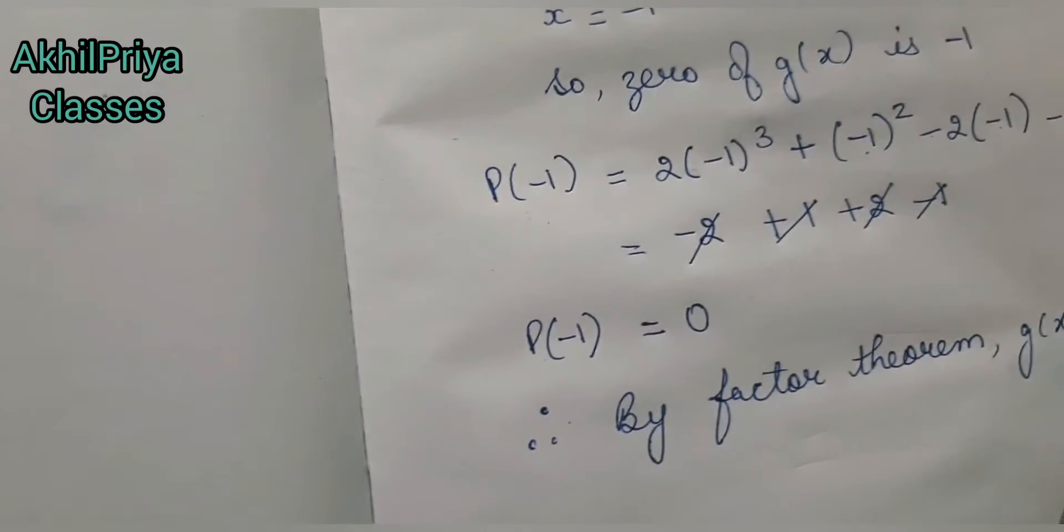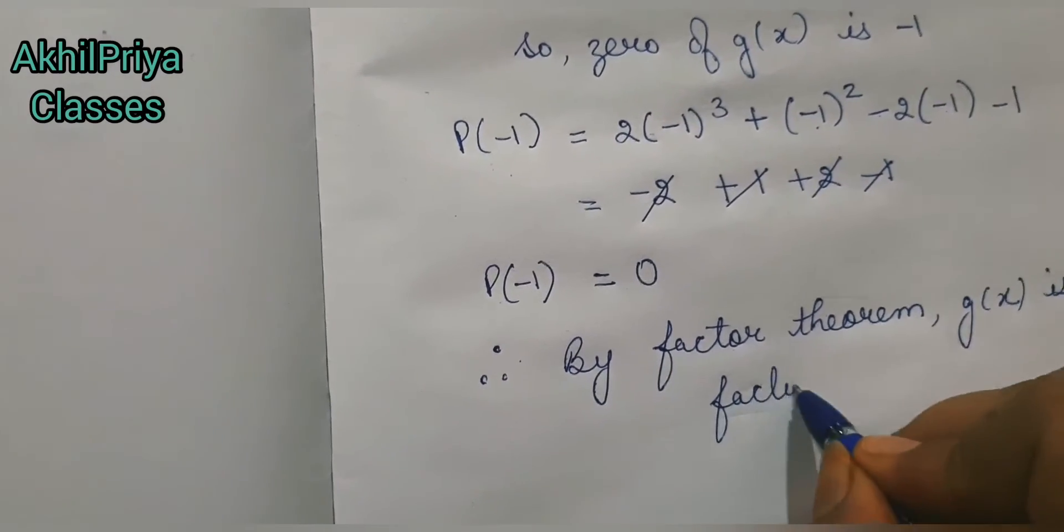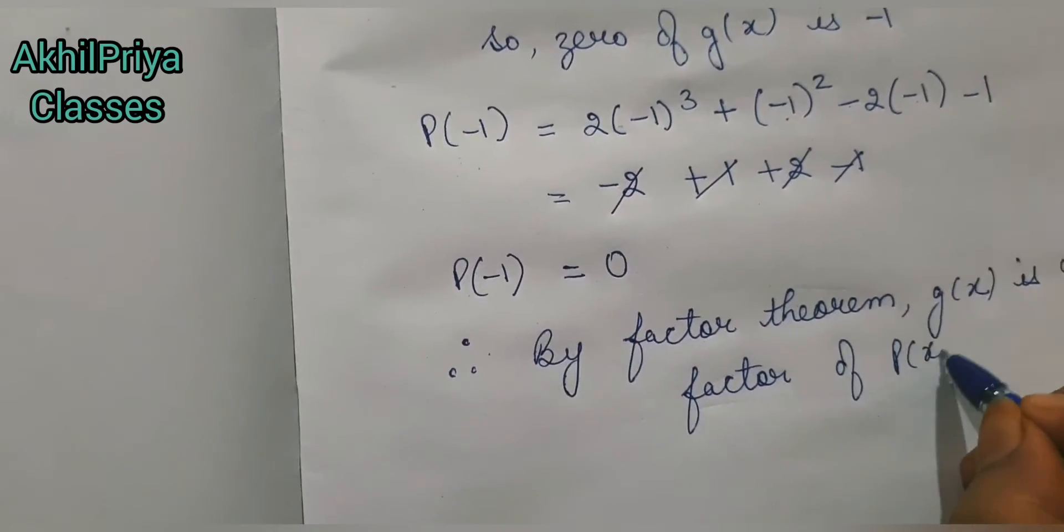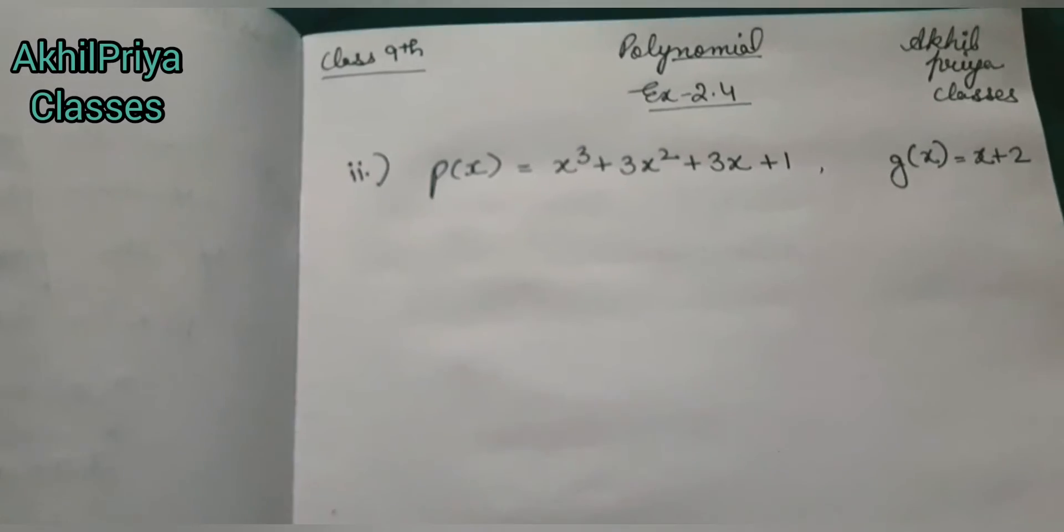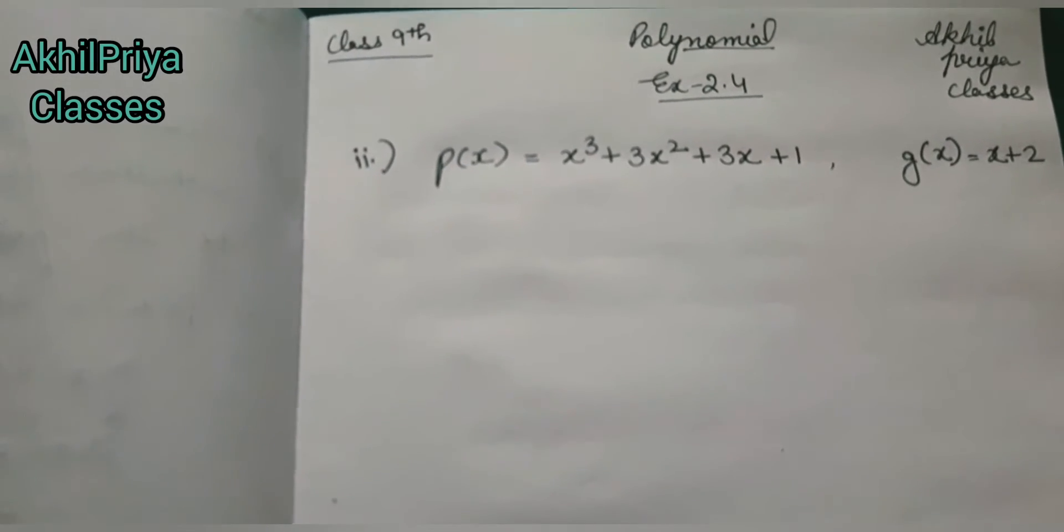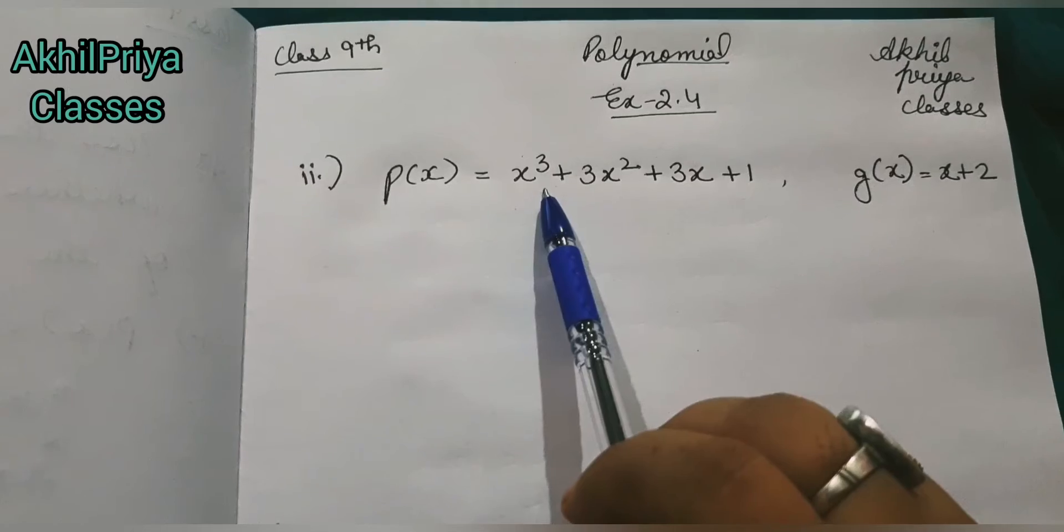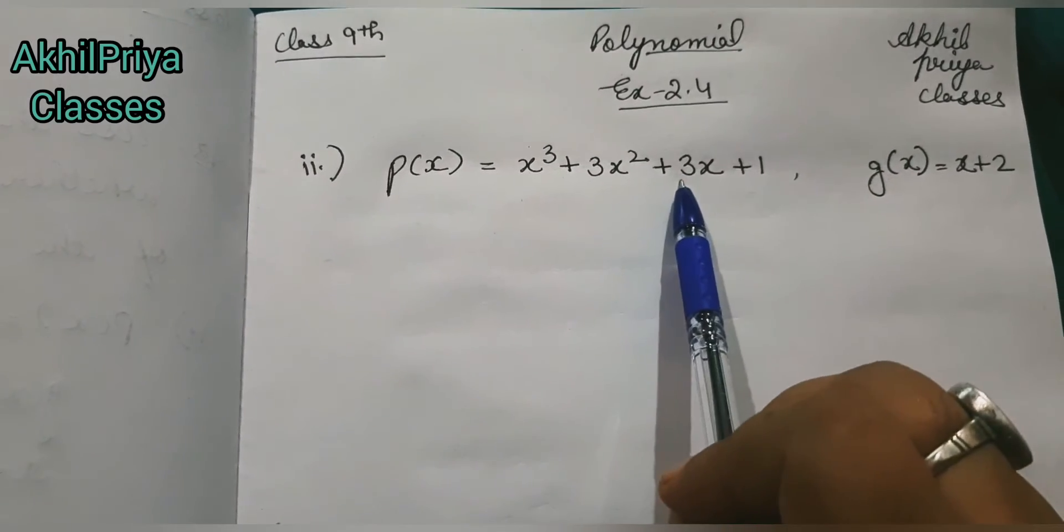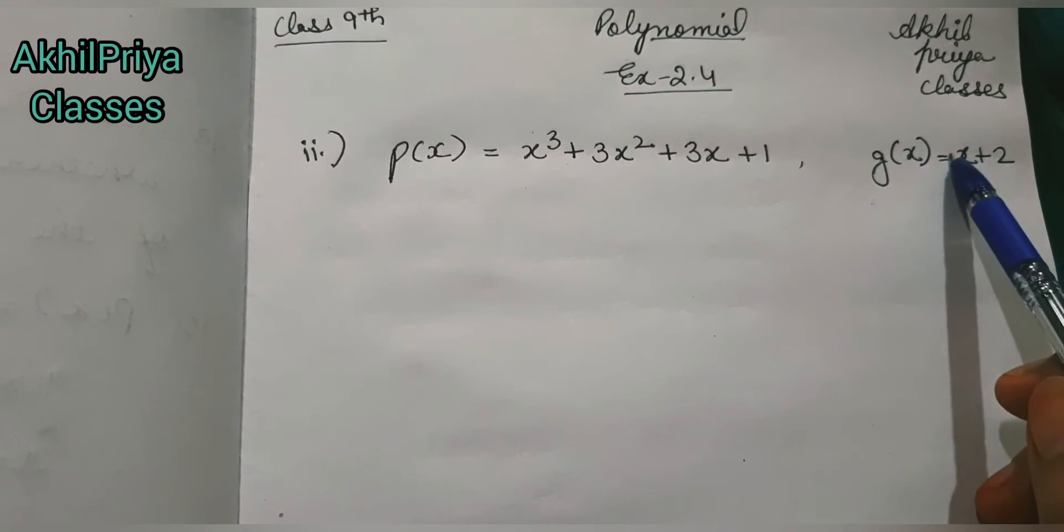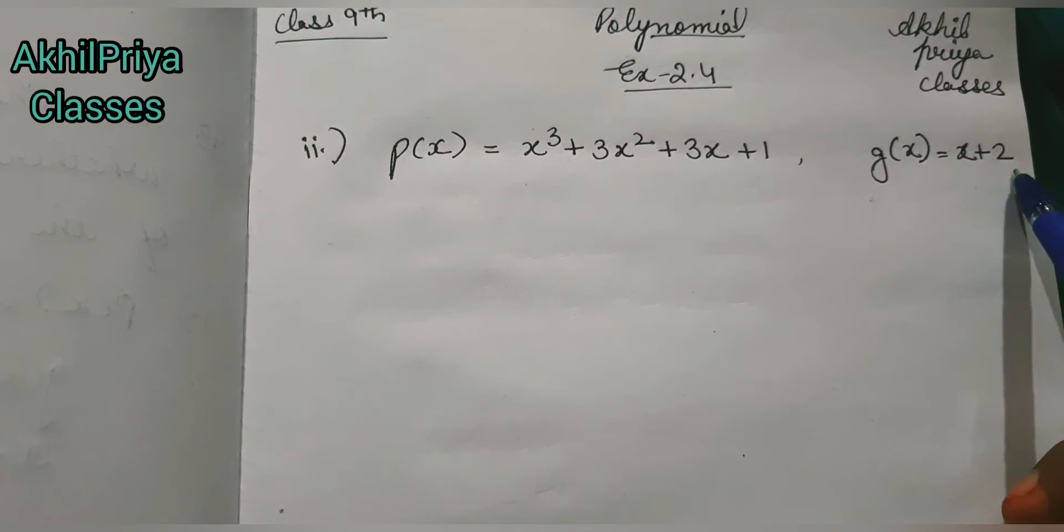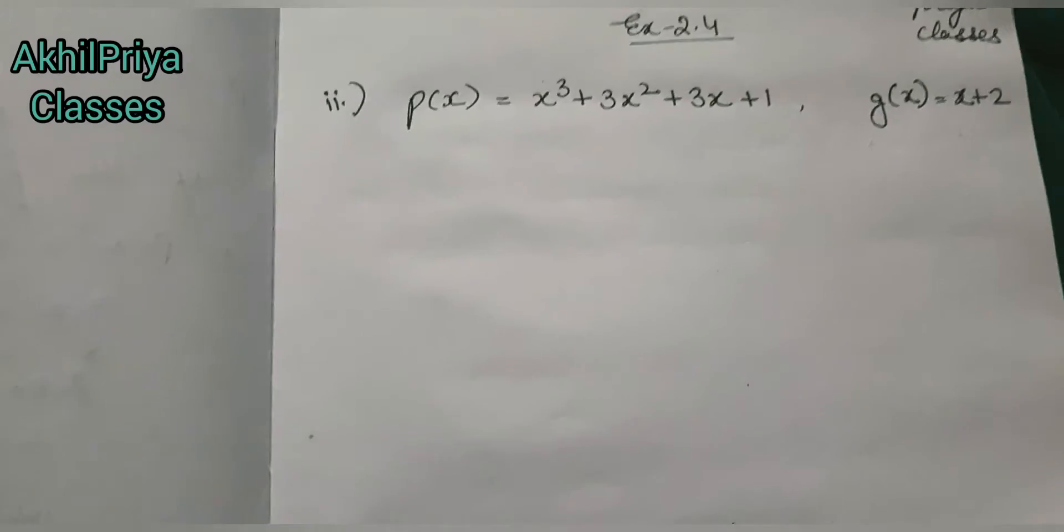So our first part solution is done. Now we will solve our second part. In our second part we have polynomial p(x) = x³ + 3x² + 3x + 1 and g(x) = x + 2. We will put g(x) = 0 and find the value of x and put that value in p(x).